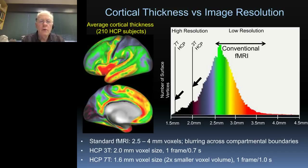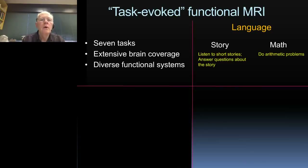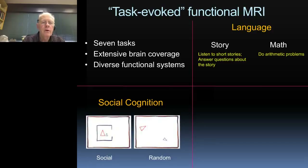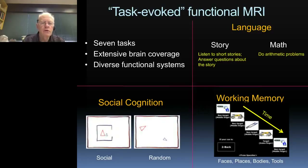In task-evoked functional MRI, we have a total of seven tasks done over an hour in total for each participant. Three examples: one is listening to stories versus doing arithmetic in your head; another is a social interaction task — looking at whether little triangles are dancing and hugging versus moving randomly on the screen; and there's a working memory task.